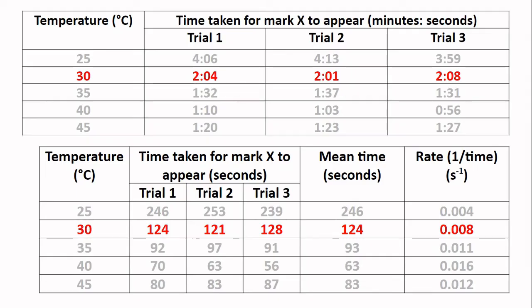So this is the processed data for 30 degrees. You can see the minutes and seconds converted into seconds only, then the average and the rate on the right. Then you've got the 35 degree one, this is the 40 degree calculations, and finally the 45 degree calculations.